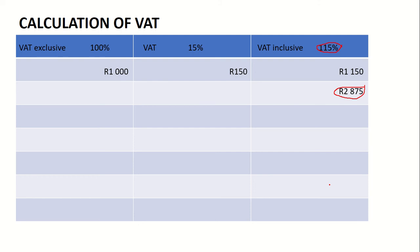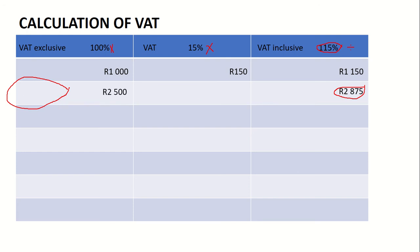That R2875 is already at 115%, so if I want the VAT amount I will take 2875 divided by 115 and multiply by 15. If I want the VAT exclusive amount, I take 2875 divided by 115 and multiply by 100 — that gives me the price without VAT. That price will be R2500. Find the difference and it'll give you your VAT amount, which in this case will be R375.